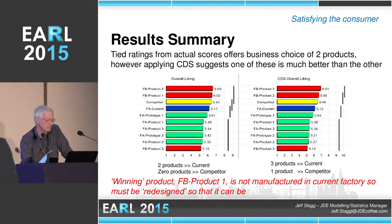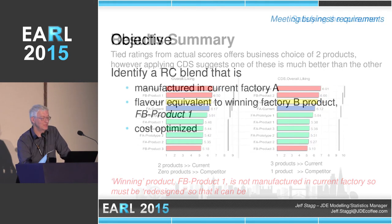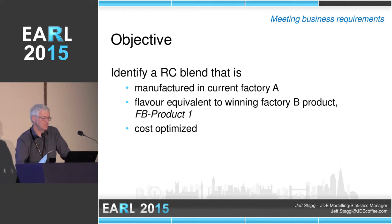So now I shall go in and demonstrate the second R application. This is the Roast Coffee Blend Generator. This has been around for a lot longer. I can't say a great deal about it and I shouldn't show too much of it either, but I will show some. The objective now is that we have a winning design, but we need something manufactured out of Factory A that would be a flavour match to it, and it's cost optimised.